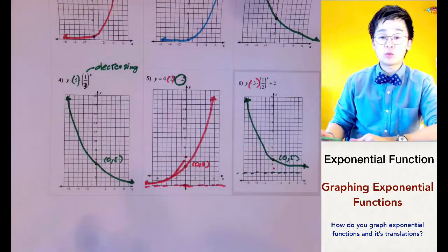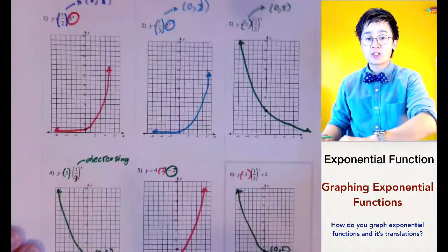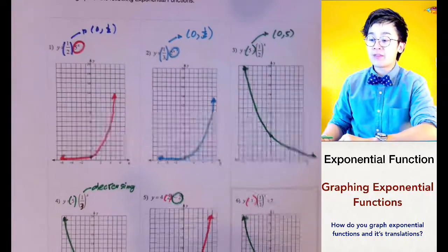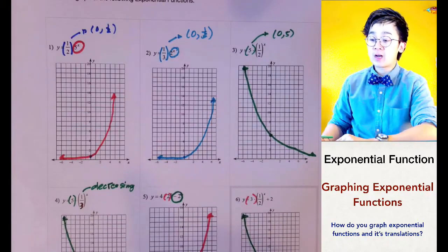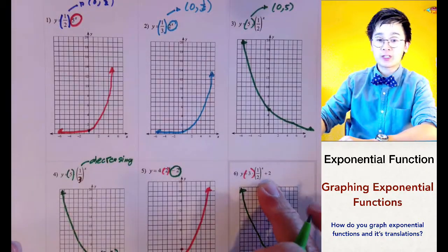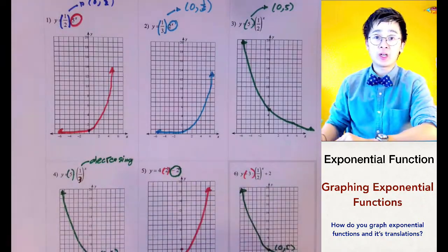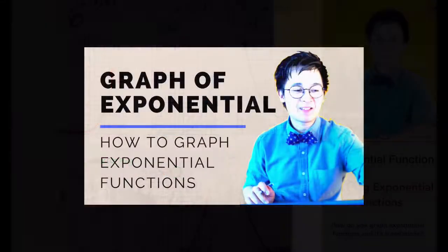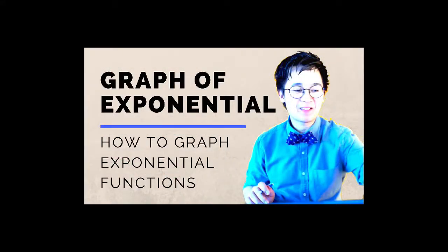This is how we graph exponential functions and their translations based on the value of a, the value of the constant, and the vertical shift — all of which we need to consider when graphing an exponential function.